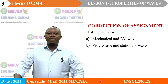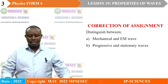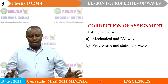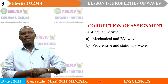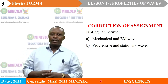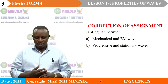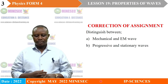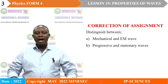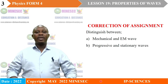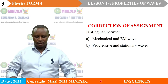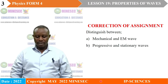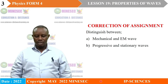We are going to begin this lesson with the correction of the assignment I gave you in the previous lesson. Remember, in our previous lesson we treated properties of waves. So we are going to take these questions: Distinguish between mechanical and electromagnetic waves, and between progressive and stationary waves.